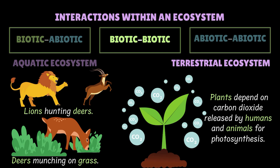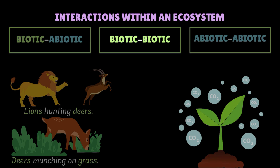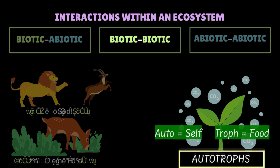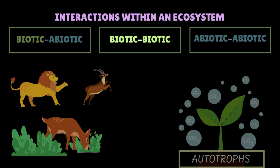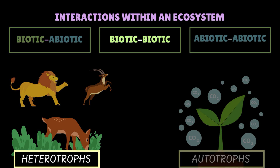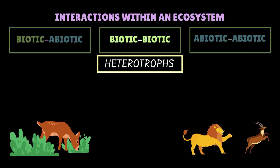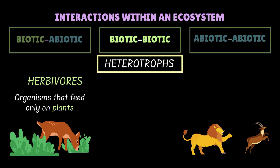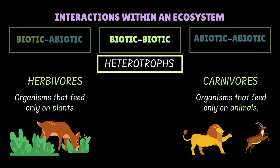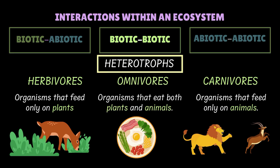Plants cook their own food using carbon dioxide released by other organisms, alongside water and sunlight. Such organisms that can make their own food are called autotrophs — 'auto' meaning self and 'troph' meaning food. Other organisms that depend on plants or animals for food are called heterotrophs — 'hetero' meaning others. Heterotrophs divide into herbivores, which feed only on plants like cows and deer; carnivores, which feed only on animals like tigers and lions; and omnivores, which eat both plants and animals, like us.